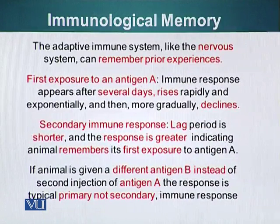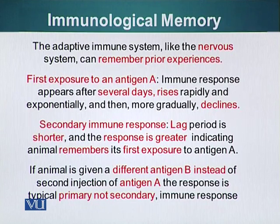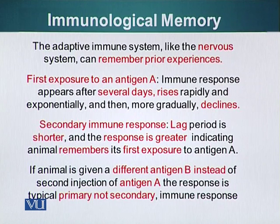Our immune system has a memory just like our nervous system. It can remember prior experiences of encounter with a particular antigen which, for example, may originate from a pathogen. On first exposure to antigen A, the immune response appears after several days, rises rapidly and exponentially, and then gradually declines.